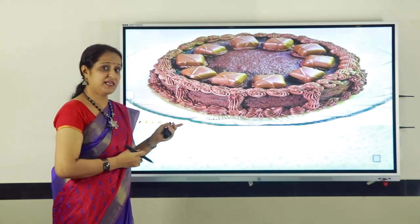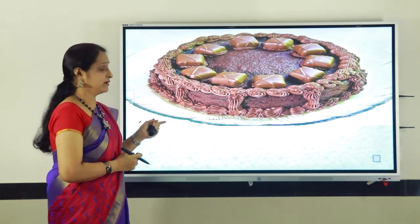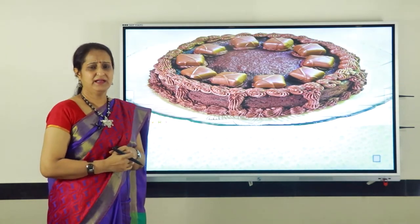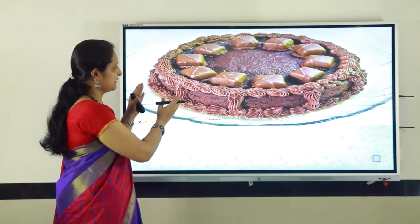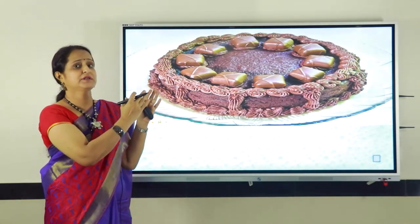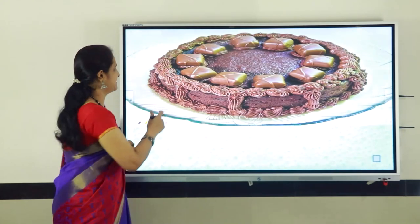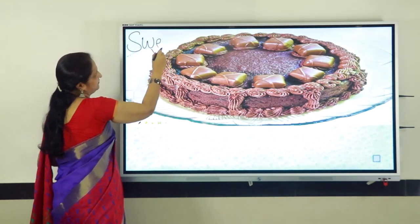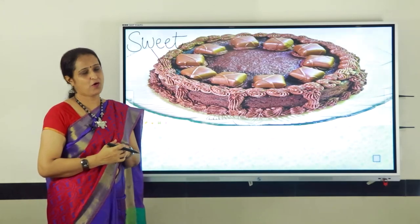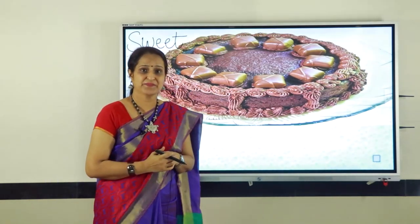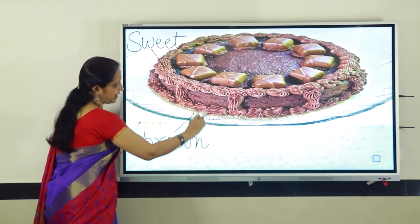The first picture you see on the screen is that of a cake. Yes children, the naming word, the noun for the picture, is cake. Let us talk more about this cake by using describing words. Just look at the cake carefully and think of some words that come into your mind. The first word that comes into our mind is sweet. Yes, the cake is sweet. Sweet describes the taste of the cake. Can you tell me the color of the cake? Yes, the cake is brown in color.